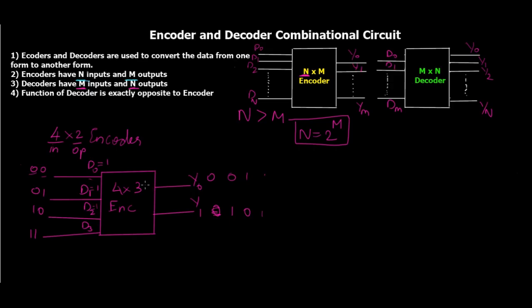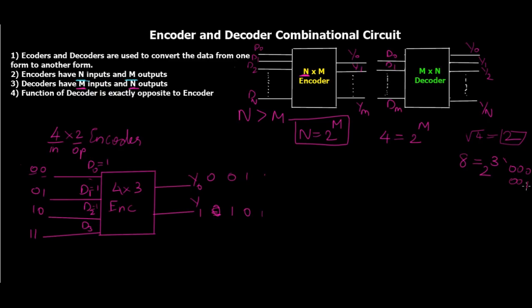These four input lines are mapped to two output lines, and that's where n equals 2 raised to m comes into picture. If n is 4, then m equals log base 2 of 4, which is 2. So if there are 8 input lines, we require 3 output lines, giving 8 unique addresses: 000, 001, 010, and so on — eight unique outputs in total.